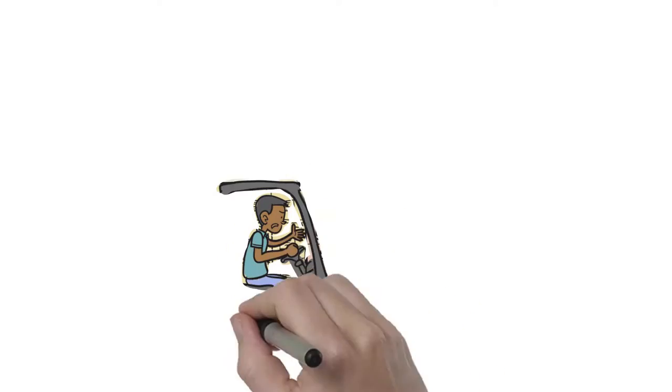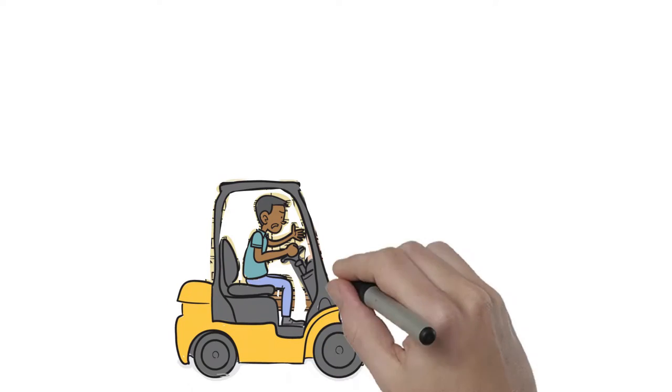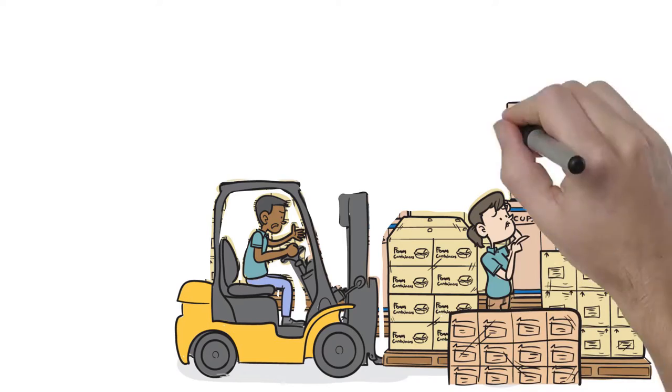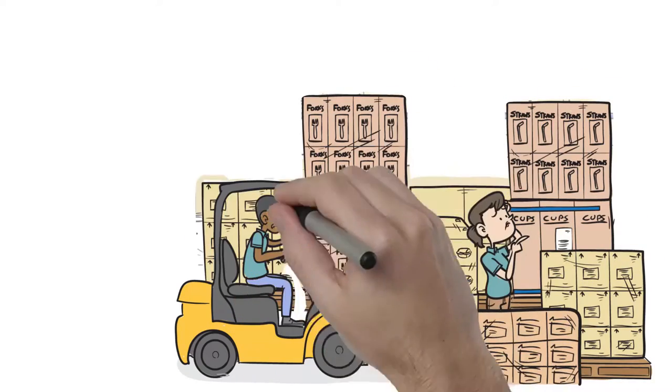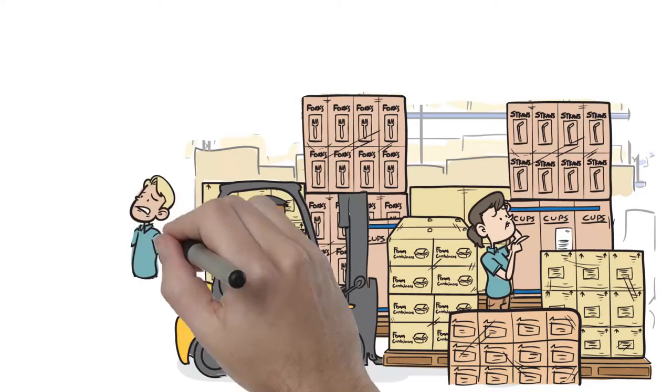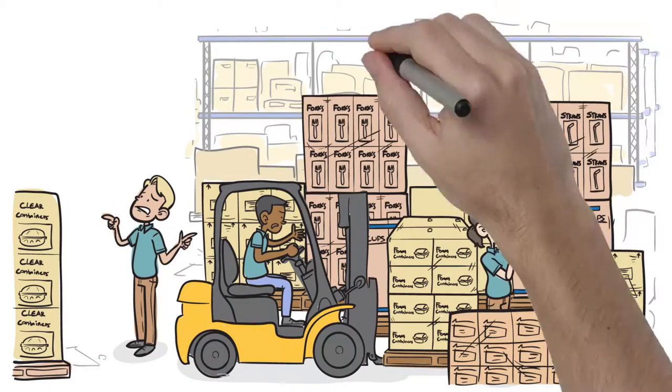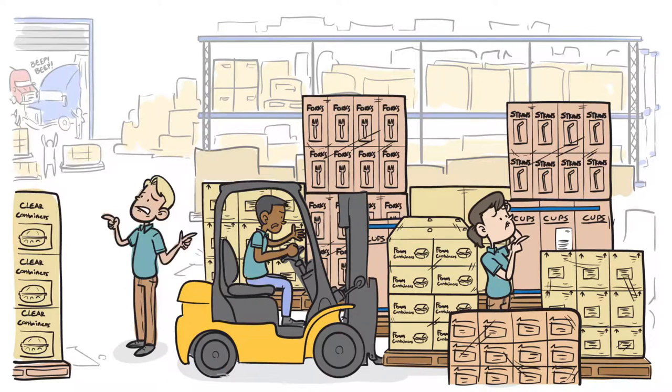But then there are the problem disposable cases. Vendor deliveries take three times as long to unload because there are more pallets and harder to put away because they don't fit in the warehouse like dry grocery. The cases are hard to select and two to three times larger so they take up more space in the warehouse and only represent eight to ten percent of the distributors business.